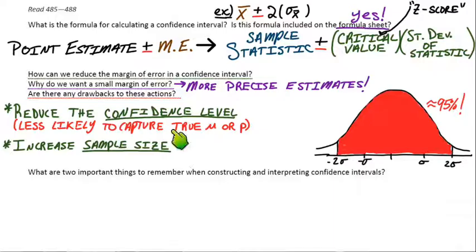We could be really confident. Remember the Garfield cartoon from the beginning of the notes? But then we have a huge interval. If we reduce that confidence level, we make the interval smaller, but then we're less likely to capture the true parameter. And then as far as the sample size is concerned, that really goes back to the design of the study. In general, that just might be more costly, more time-consuming.